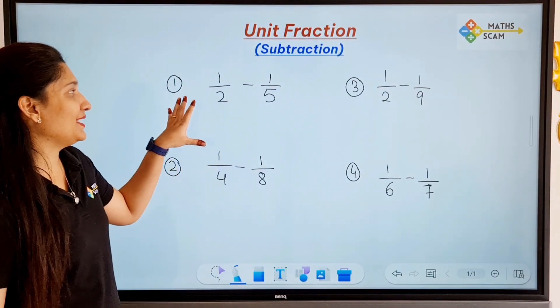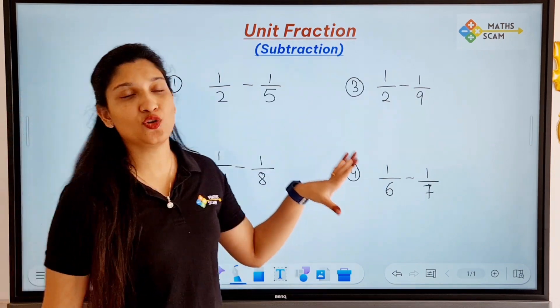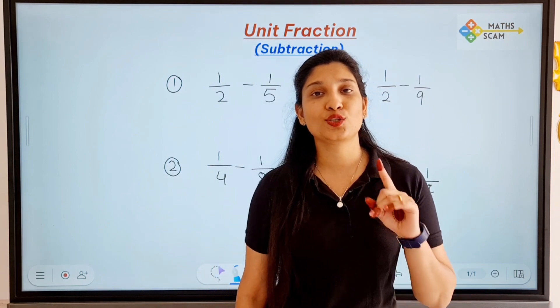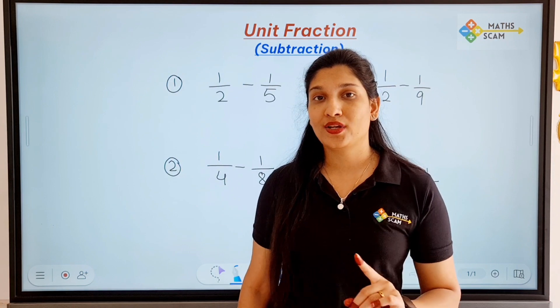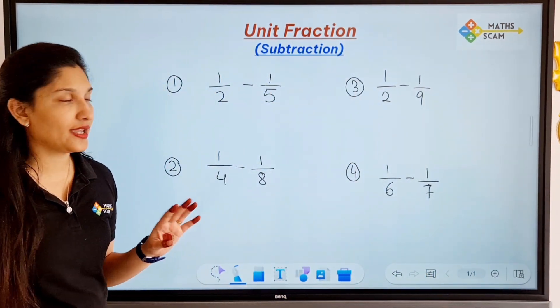So the first question you can see is 1 by 2 minus 1 by 5. You can see all the questions having the numerator as 1. When the numerators are 1, that fraction is called a unit fraction. The numerator has to be 1. Okay, so this trick will work only for unit fractions, not all fractions. Very easy trick.